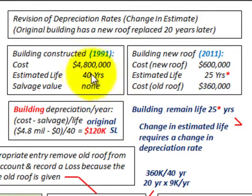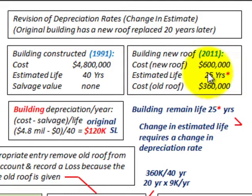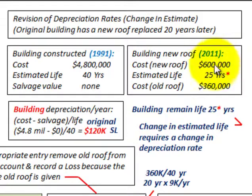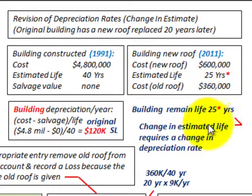This is based on our estimated life originally at 40 years. Now, we're going to put a new roof on this building and it's going to extend the life of the building. The remaining life on the building is going to be 25 years, the life of the newer roof. The cost of the new roof is $600,000 and the cost of the old roof is $360,000. We've changed the estimated life to 25 years, which requires a change in our depreciation rates.